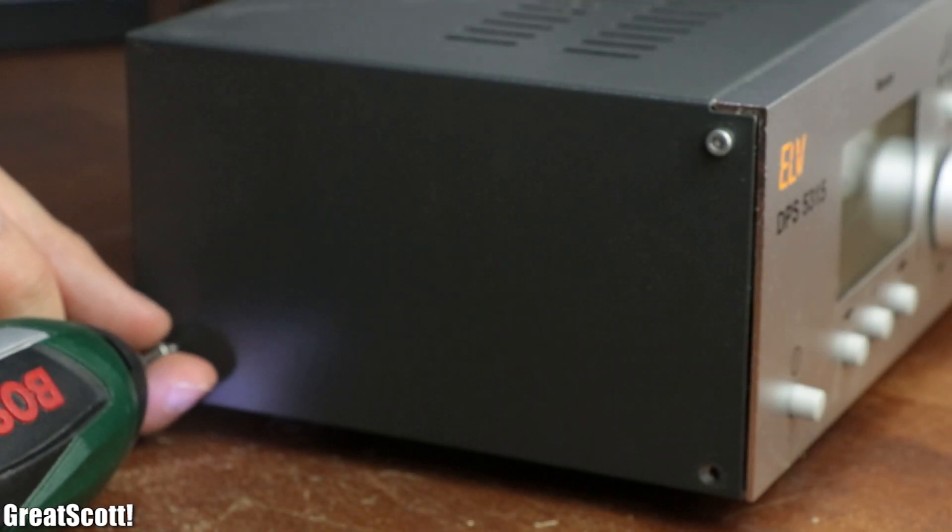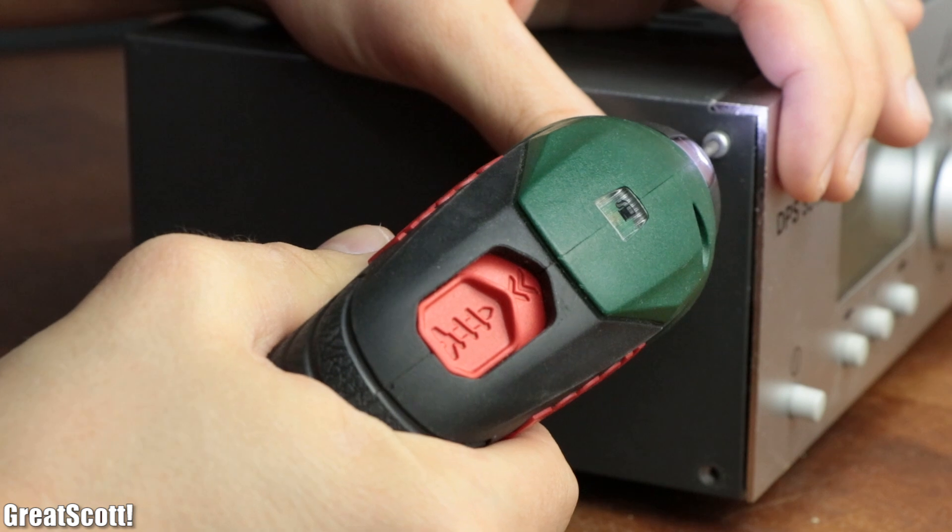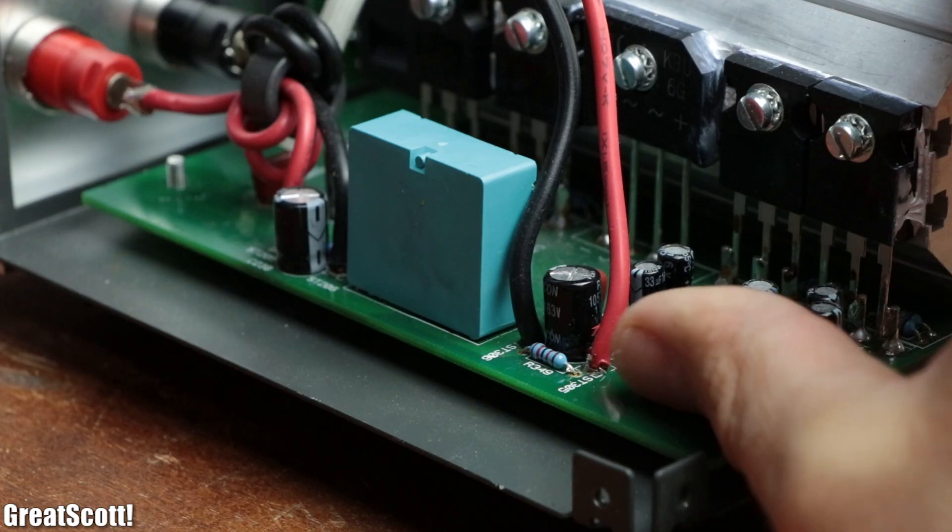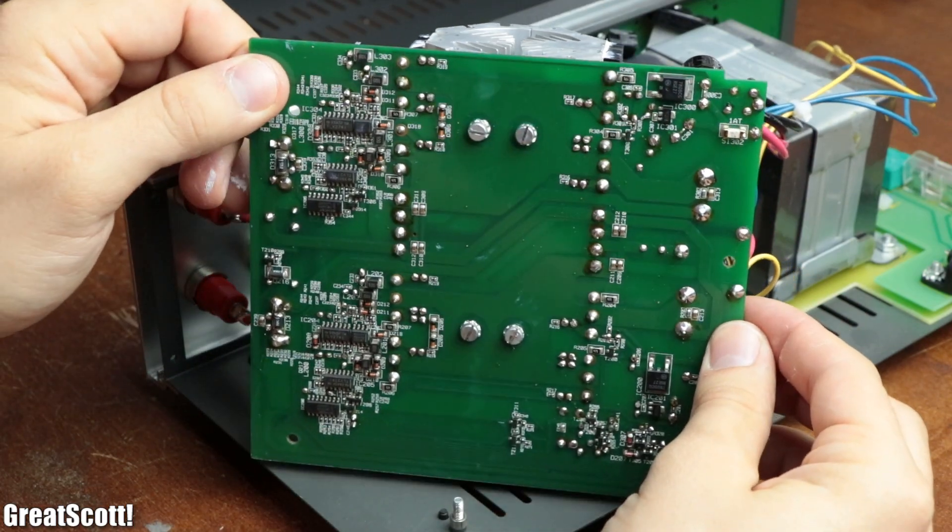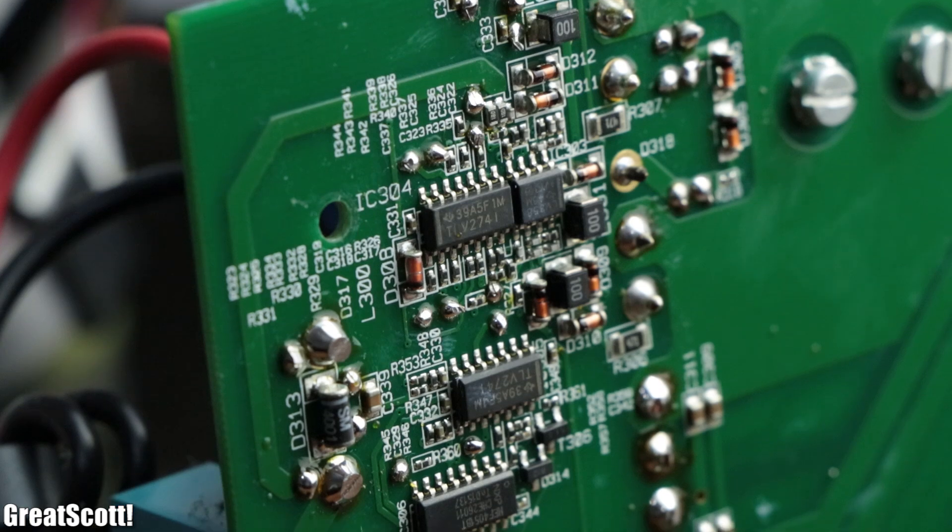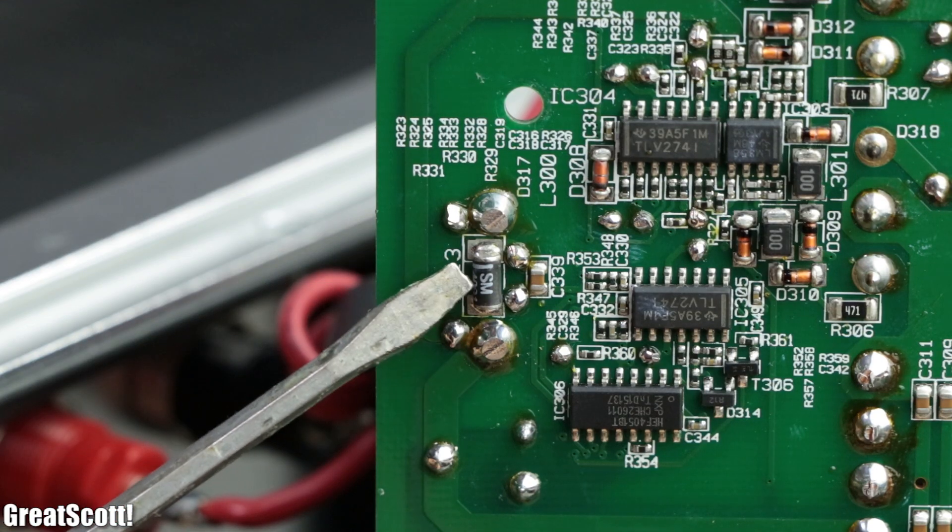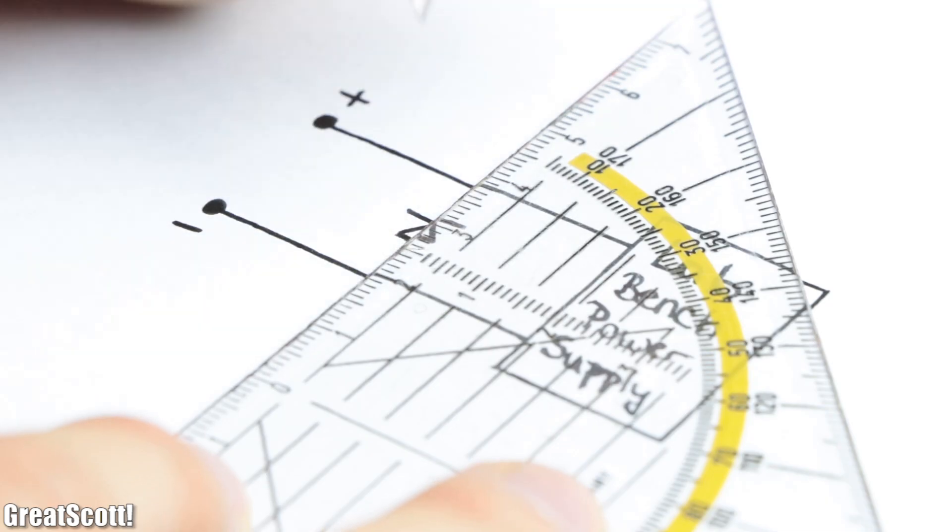For the first repair step I obviously had to open up the lab bench power supply. After removing a few dozens of screws I removed the nut that held the main PCB in place and lifted it out in order to inspect the circuitry around the two power output channels. What stood out to me was an SMD diode which was connected between each one of the output terminals like shown in this schematic.